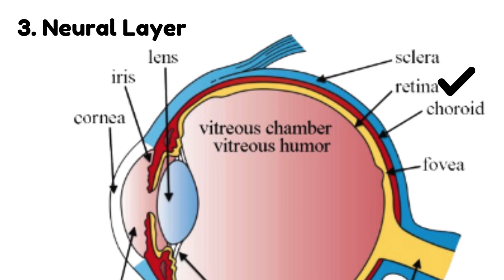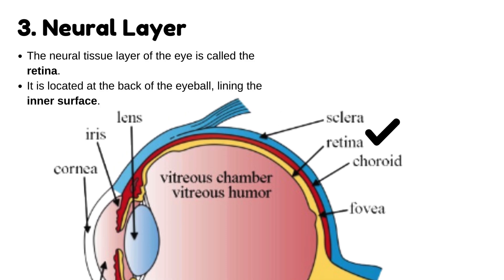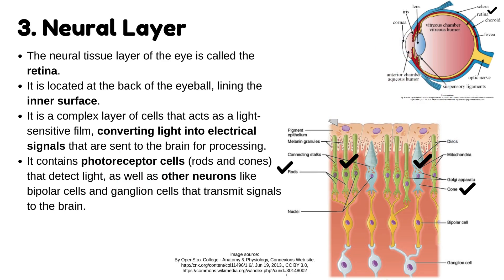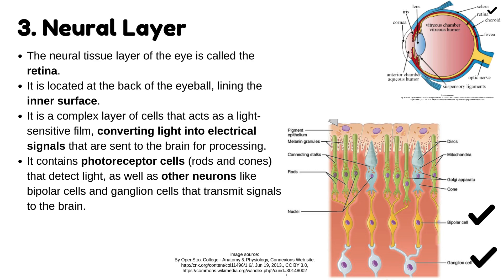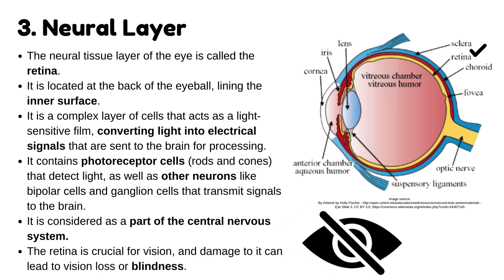Finally, we reach the neural layer, called the retina, lining the inner surface of the eye. The retina is located at the back of the eyeball and is a complex layer of cells that acts as a light-sensitive film, converting light into electrical signals that are sent to the brain for processing. It contains photoreceptor cells — rods and cones — that detect light, as well as other neurons like bipolar cells and ganglion cells that transmit signals to the brain. The retina is considered part of the central nervous system, and damage to it can lead to vision loss or blindness.